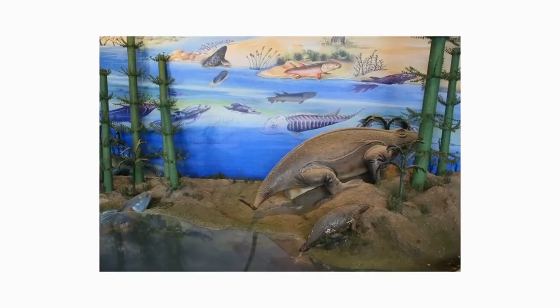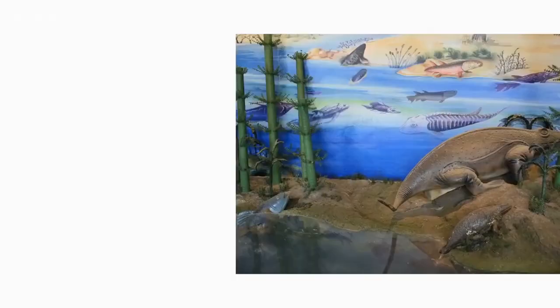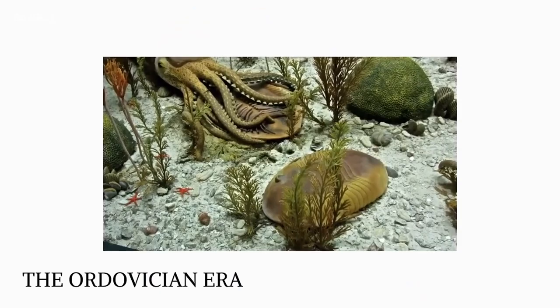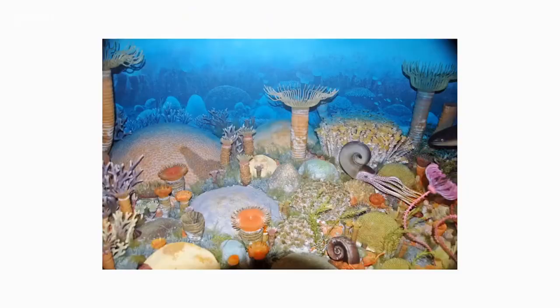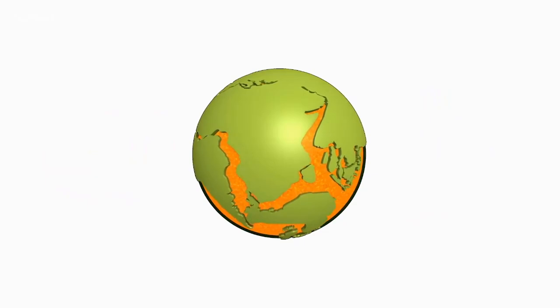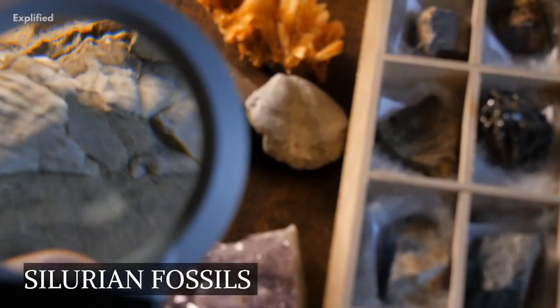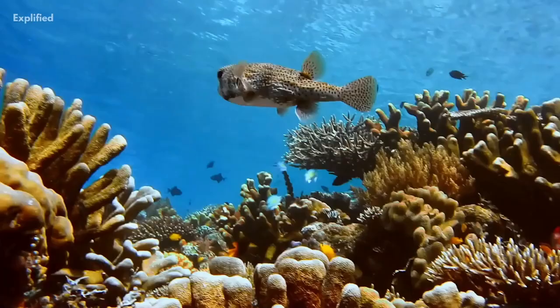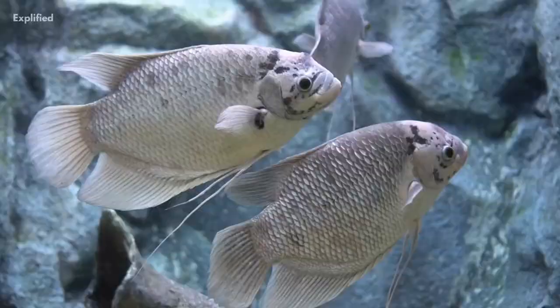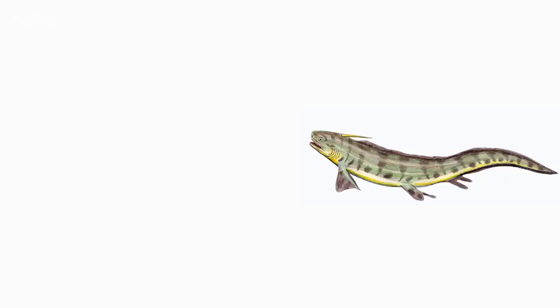The Silurian period occurred from 443.8 million to 419.2 million years ago — the Paleozoic era's third phase. Named by Murchison in 1839 for the Silures, a tribe of the Welsh borderland, it came after the Ordovician and before the Devonian era. Continental landmasses were low and sea levels were rising, resulting in a plethora of novel biological niches in shallow water habitats. Silurian fossils reveal significant reef construction and the earliest traces of life colonizing new estuaries, freshwater habitats, and terrestrial environments.